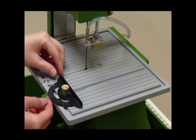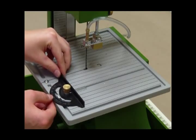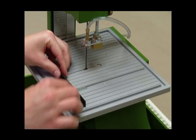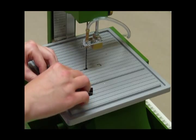The miter guide fits into the table and holds the material being cut at the desired angle. Say you want a 45 degree angle for framing. Set the miter, lock it down, then cut.